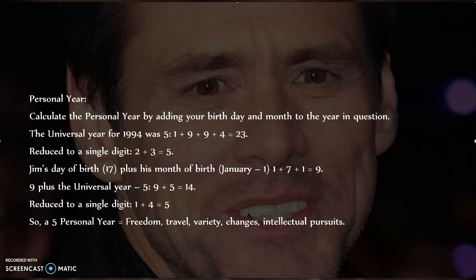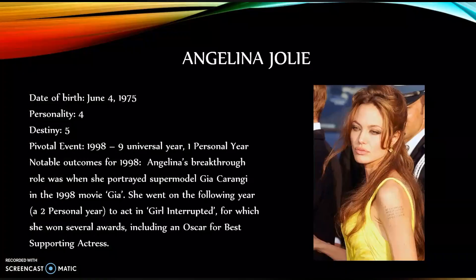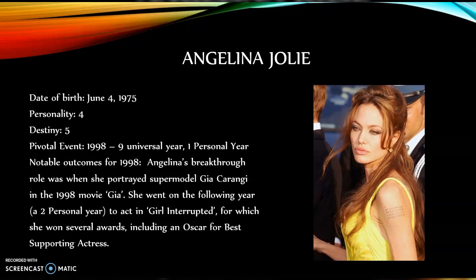Angelina Jolie's date of birth is June the 4th, 1975. Her personality is four, her destiny is five, and the pivotal event we'll be focusing on is 1998, which was a nine universal year and a one personal year for Angelina. Notable outcomes for 1998: Angelina's breakthrough role was when she portrayed supermodel Gia Carangi in the 1998 movie Gia. She went on the following year — a personal year two — to act in Girl, Interrupted, for which she won several awards including an Oscar for Best Supporting Actress.